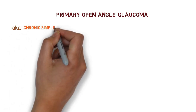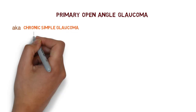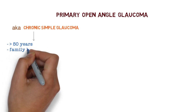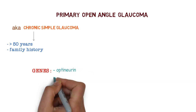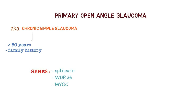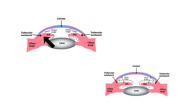Primary open angle glaucoma is also called chronic simple glaucoma. It is more common in those over 50 years of age. Strong family history is a risk factor because it is carried by genes like optineurin, MYOC, and WDR36. Unlike angle closure glaucoma where the angle is narrow due to pupillary block, in this condition the angle is open but there is a problem in the trabecular meshwork.